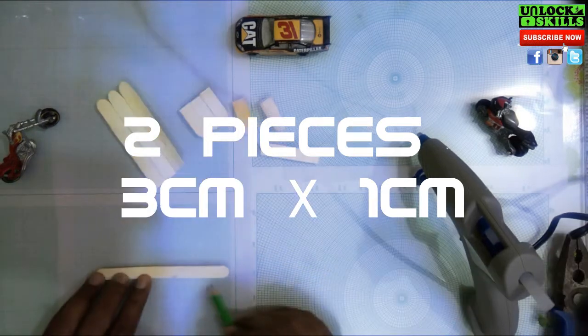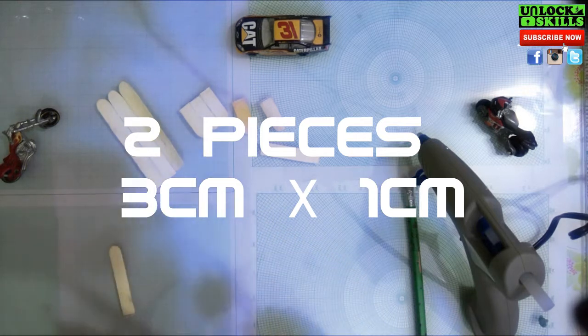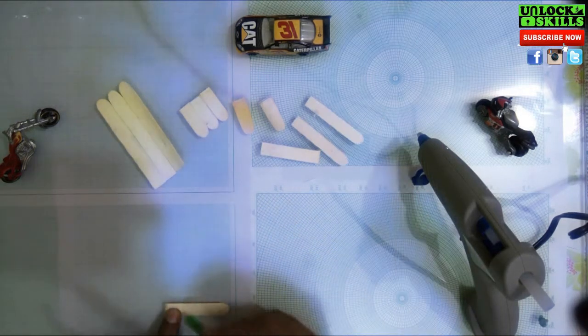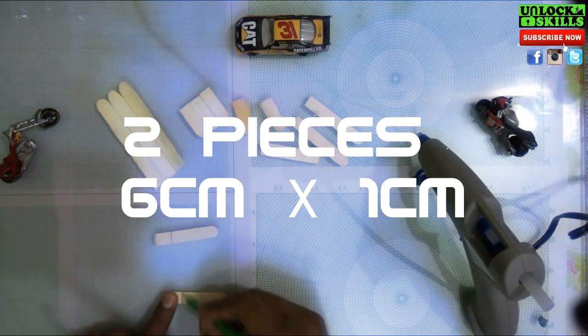Next we'd be requiring two more pieces which is a little bit lengthier, which would be six centimeters in length and one centimeter in width. This will be forming a front leg support for this chair.